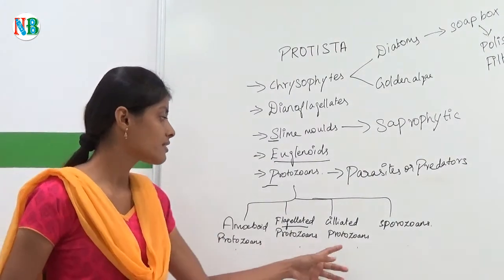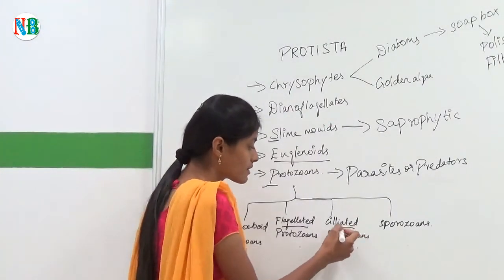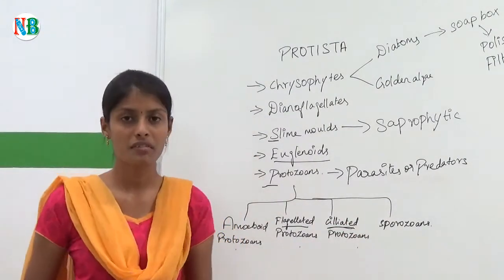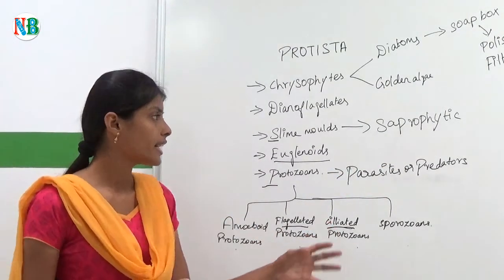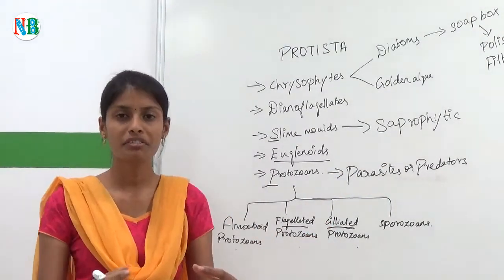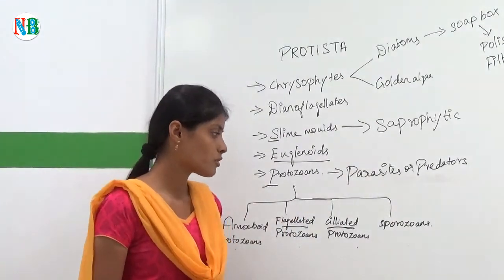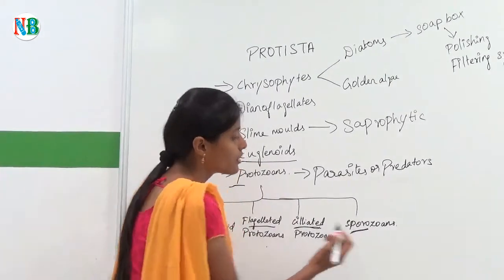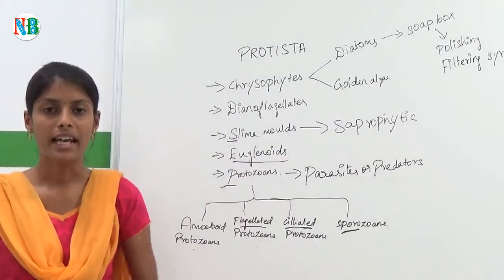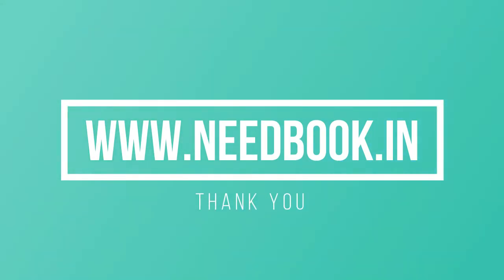The next one is ciliated protozoans. As the name indicates, they contain thousands of cilia and they have an opening called the gullet. The cilia help food to go into the gullet. Then there are sporozoans — the name itself indicates they have spores in their life cycle. Thank you for watching; visit us at needbook.in.